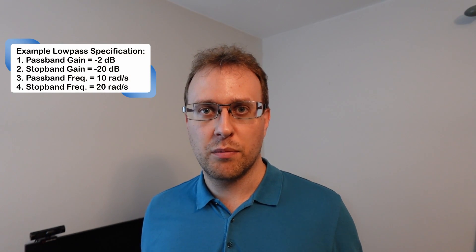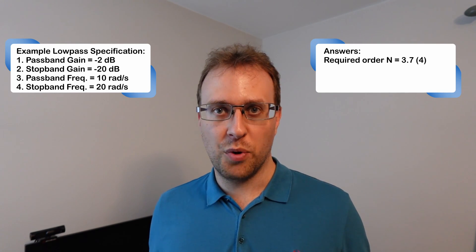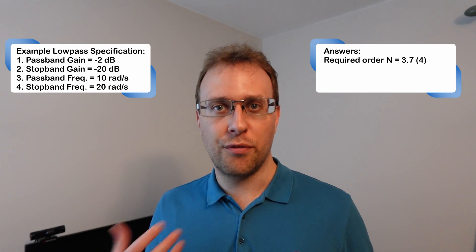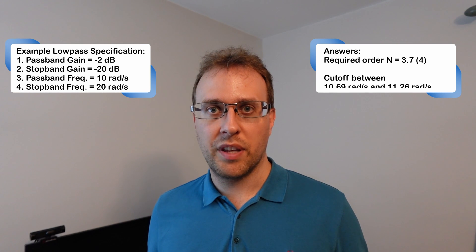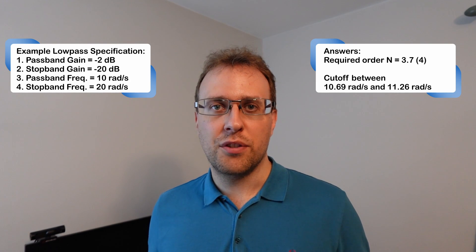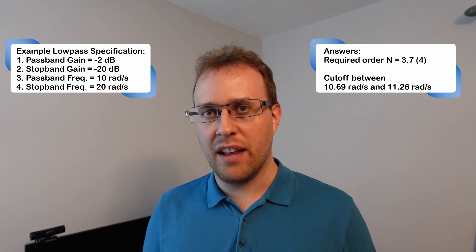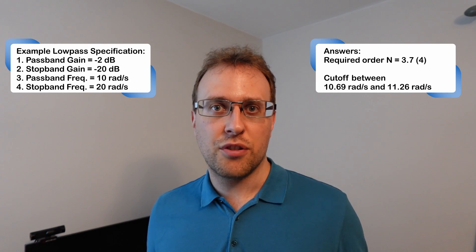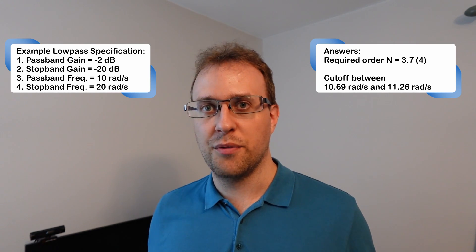Let's look at a quick example. Say we have a filter performance specification where we want a pass band of minus 2 dB, a stop band of minus 20 dB, and pass band and stop band frequencies of 10 radians per second and 20 radians per second. If we use the order formula we would calculate the required order is 3.7, so we have to round this up to 4. The cutoff frequencies that we would calculate are 10.69 radians per second in the pass band and 11.26 radians per second in the stop band. This means that in the implementation we can pick a cutoff frequency anywhere between these two values.